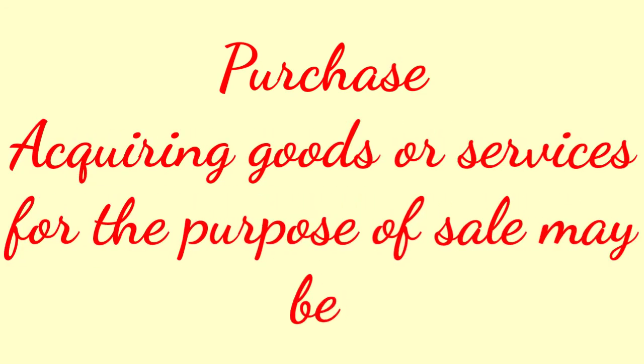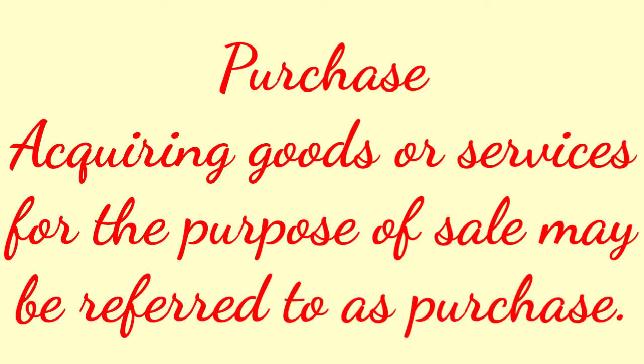Acquiring goods or services for the purpose of sell may be referred to as purchase. For example, a cloth merchant acquiring clothes or a furniture dealer acquiring furniture can be regarded as purchase. Modern Furniture House purchased 5 steel almirahs from Godrej Company, which is obviously an example of purchase. But if Modern Furniture House purchases 3 table fans for use in the shop, this will be considered as assets of the business, and it will not be considered as purchases. So usage also plays a great role.